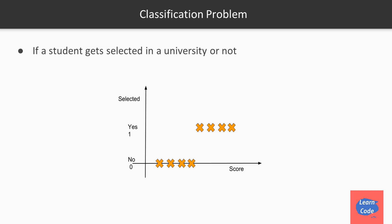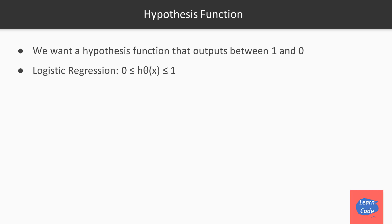Let's take another example. Here we want to predict if a student will get into a university or not. Anything below a certain score disqualifies the student, and anything above is considered a good score to get into that university. If we use something like linear regression, we will get a straight line but not the optimal value. We want a line that clearly defines a yes or no answer. Basically, we want the hypothesis function such that the output is always between 0 and 1, and that is what we get from logistic regression.